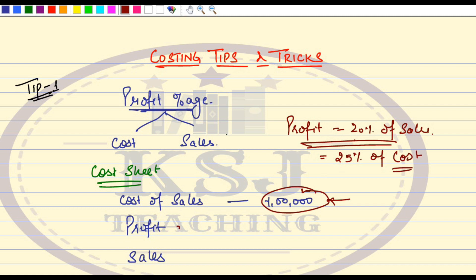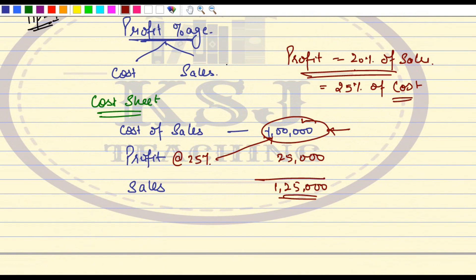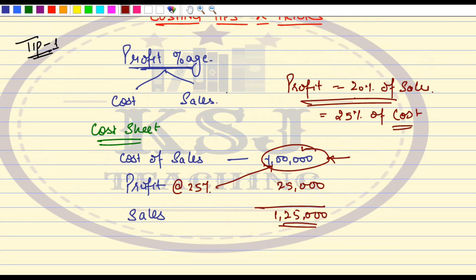Now you can apply profit at 25% on 1 lakh rupees, which gives 25,000 as the profit, and your sales value is 1 lakh 25,000. This seems like a very small tip but it is very important, because many times students commit mistakes here. Whenever there is a profit percentage given in any question, in any chapter, the first thing you must check is whether it is given on cost or on sales. If it is given on sales, convert it to profit percentage on cost, apply it, and solve your question.